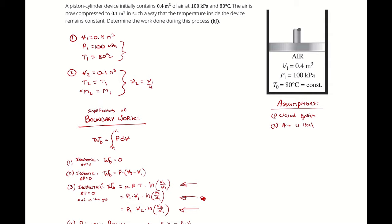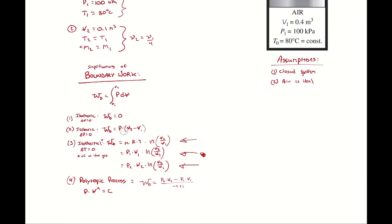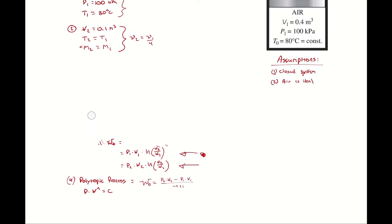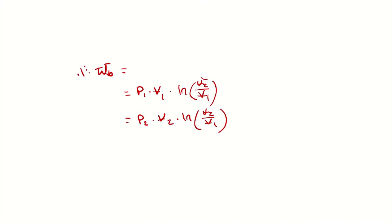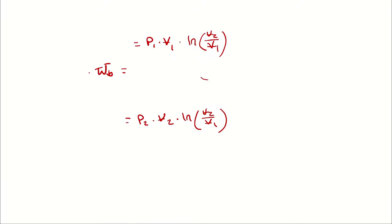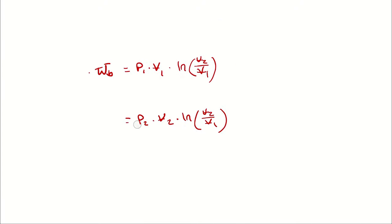We could also use P2 and V2 since we know V2 and could determine P2 with the ideal gas law. But we should eliminate as many steps as possible, so using P1V1 is the easiest method. The boundary work equals P1 times V1 times the natural log of V2 over V1, because we already derived the simplification for the boundary work of an isothermal process of an ideal gas.